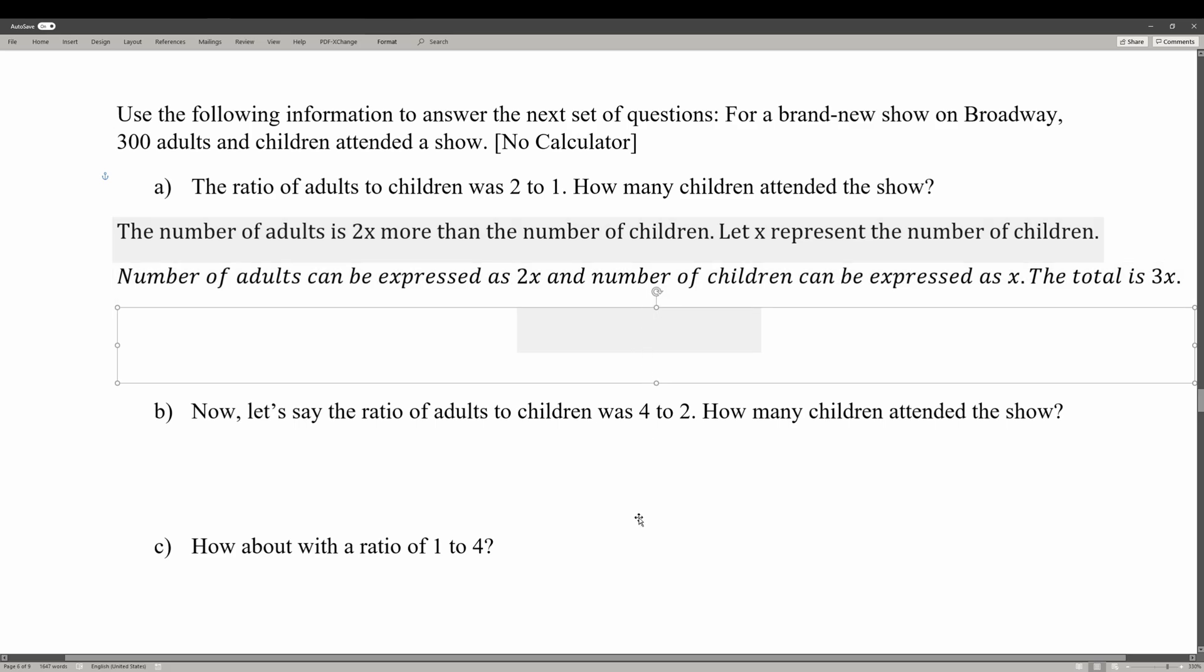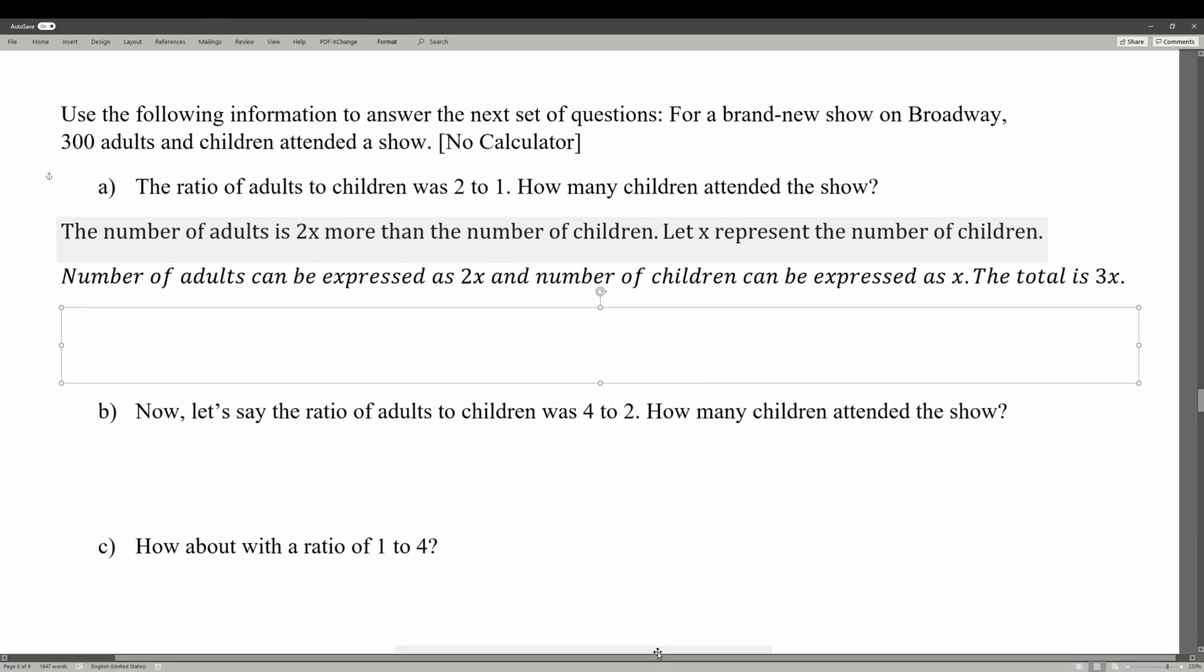Then we set the total, which is 3x, equal to the number of people that attended the show, which is 300. And we get that x is equal to 100. So we have 100 children that attended the show.